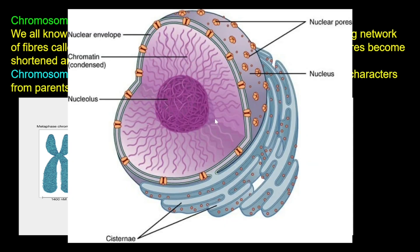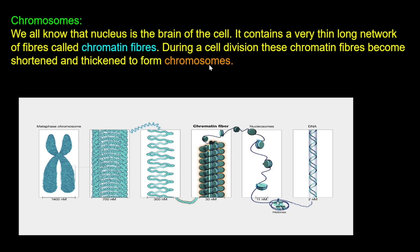This is the nucleus, and this is the thread-like structure called chromatin. During cell division, these chromatin fibres become shortened and thickened to form chromosomes.